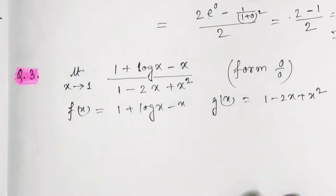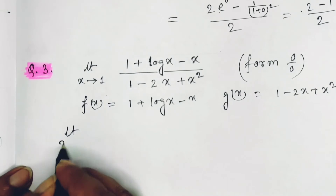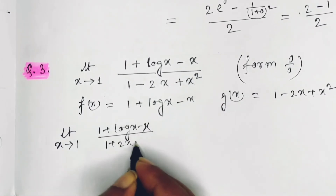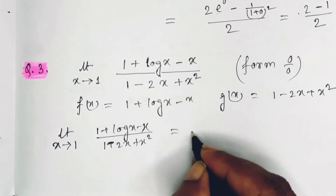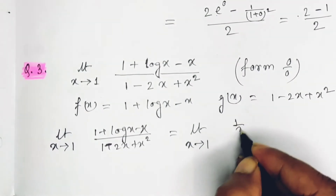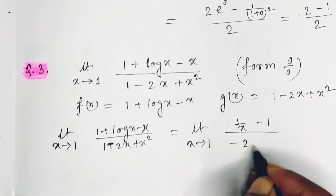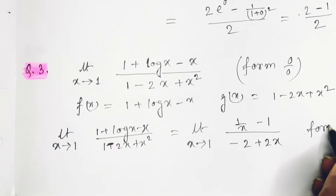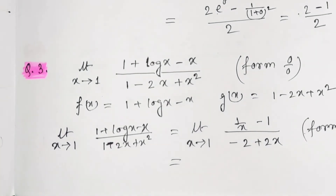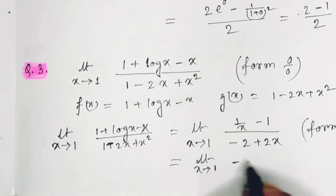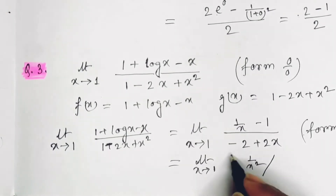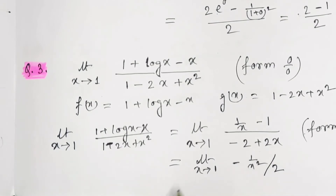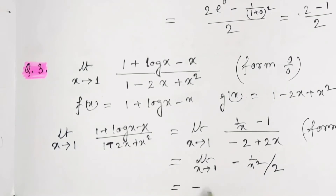Third example: limit x → 1 of (1 + log x − x) / (1 − 2x + x²). Taking derivatives: numerator gives 1/x − 1, denominator gives −2 + 2x. Substituting x = 1: 1/1 − 1 = 0 and −2 + 2 = 0 — still 0/0. Differentiate again: numerator gives −1/x², denominator gives 2. Substituting x = 1: −1/1² = −1, divided by 2. Answer: −1/2.